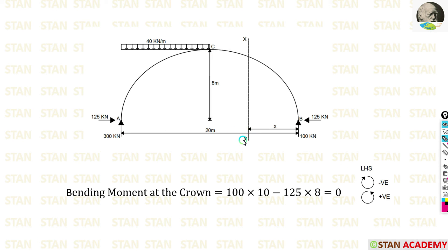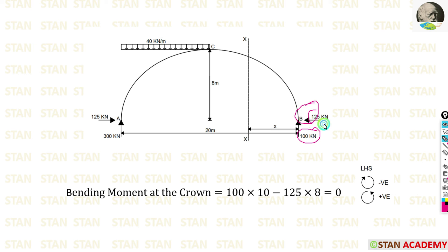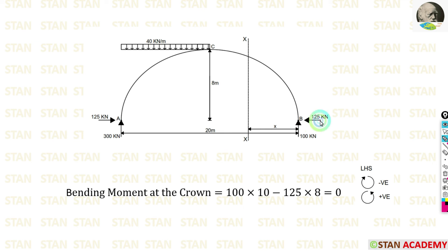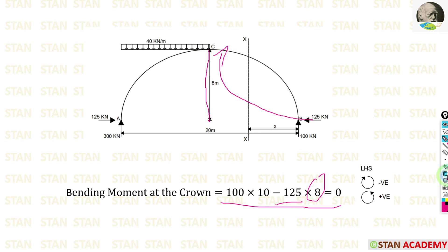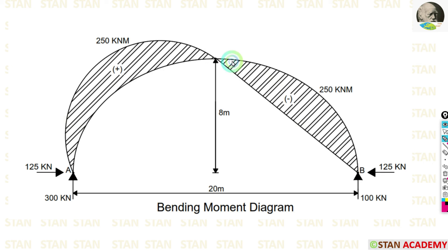Before drawing the BMD, we verify that the bending moment at the crown is zero. Taking moment about the crown from point B: VB × 10 − H × 8 = 100 × 10 − 125 × 8 = 1000 − 1000 = 0. Confirmed — the crown moment is zero, as expected for a three-hinged arch.